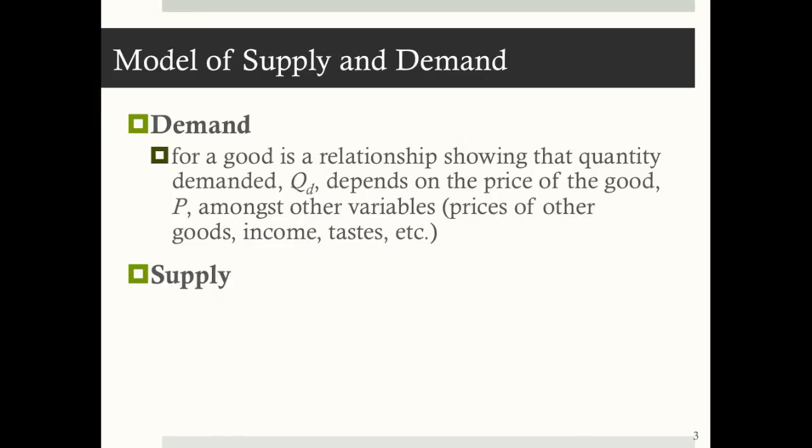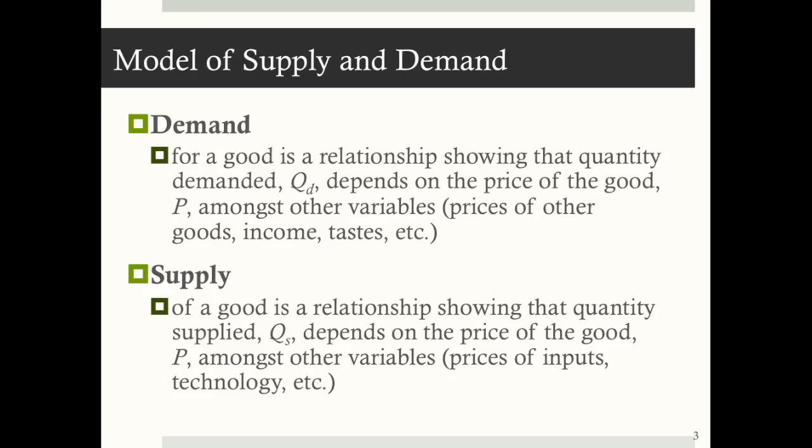Demand for a good is a relationship showing that quantity demanded, Q sub D, depends on the price of the good, P, amongst many other variables. Supply of a good is a relationship showing that quantity supplied, Q sub S, depends on the price of the good, P, amongst other variables.